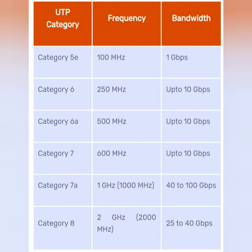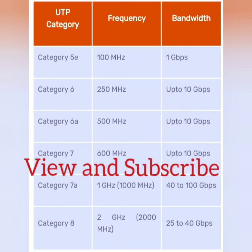Category 7A has a frequency of 1 GHz, that is 1000 MHz, and a bandwidth of 40 to 100 Gbps. Category 8 has a frequency of 2 GHz, that is 2000 MHz, and a bandwidth of 25 to 40 Gbps.